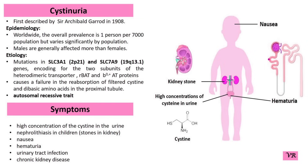Mutations in the SLC3A1 and SLC7A9 genes, which encode for proteins involved in the renal reabsorption of amino acids, are associated with Cystinuria.